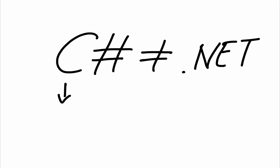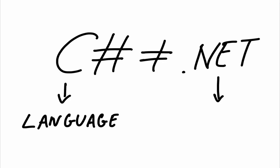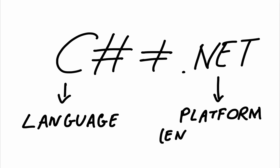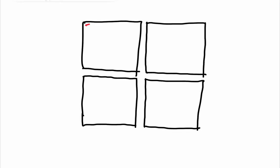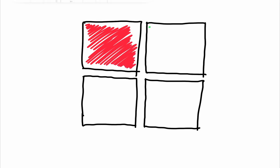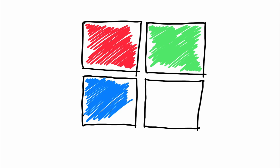The first thing I noticed among fresh developers is that there is a certain confusion between C-sharp and .NET. So let's get this straight: C-sharp is not .NET. C-sharp is a computer programming language, while .NET is an environment on which C-sharp can run. Both of them were developed by Microsoft in an effort to improve the overall programming experience.